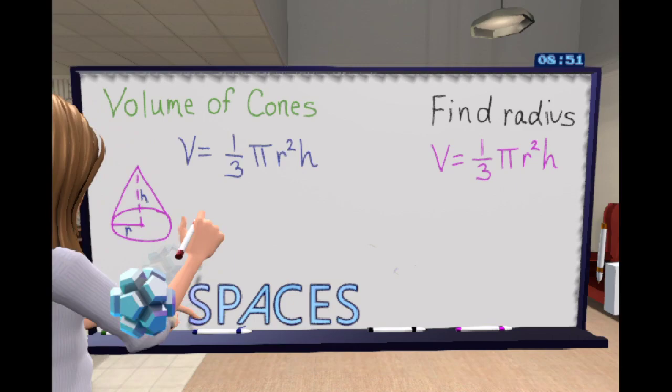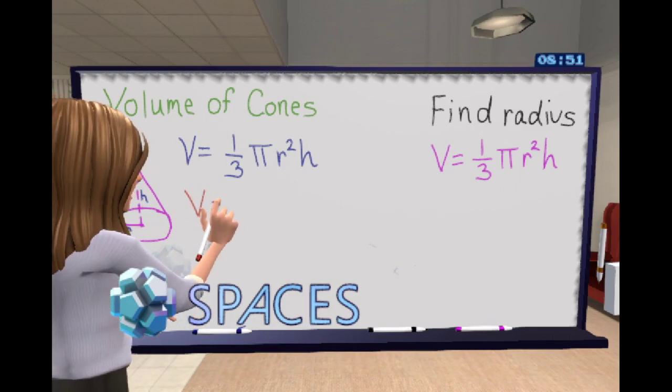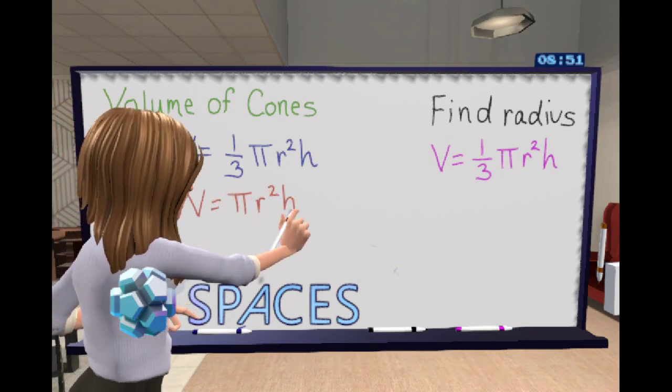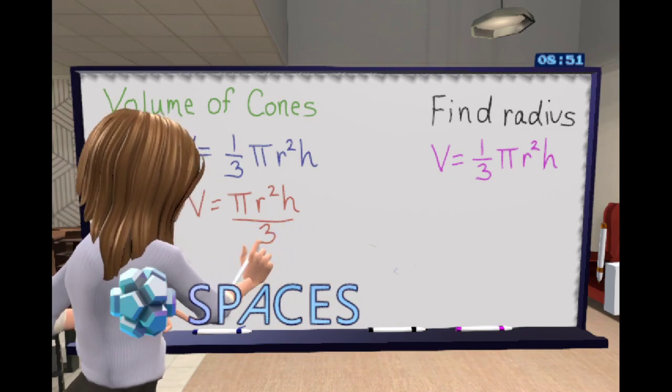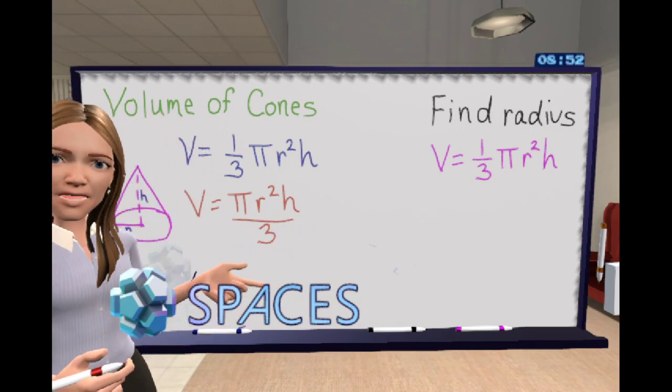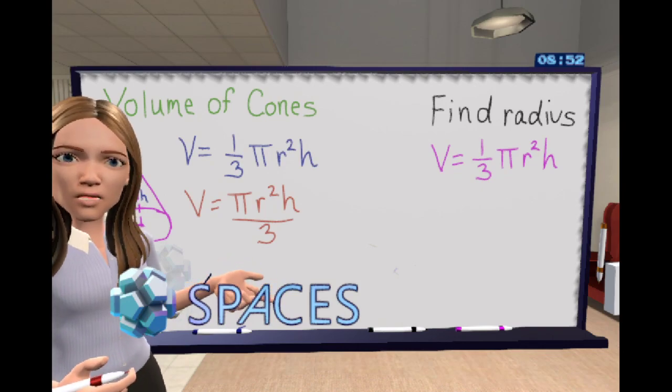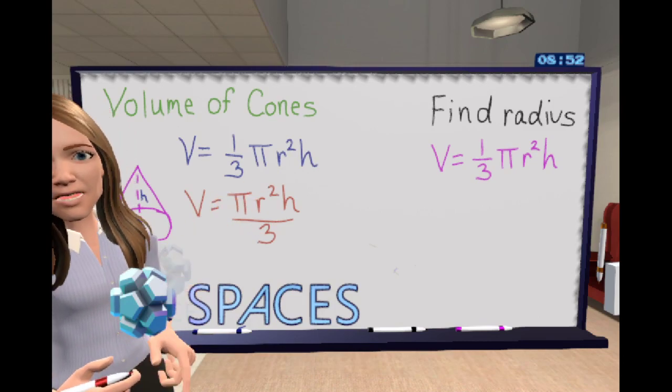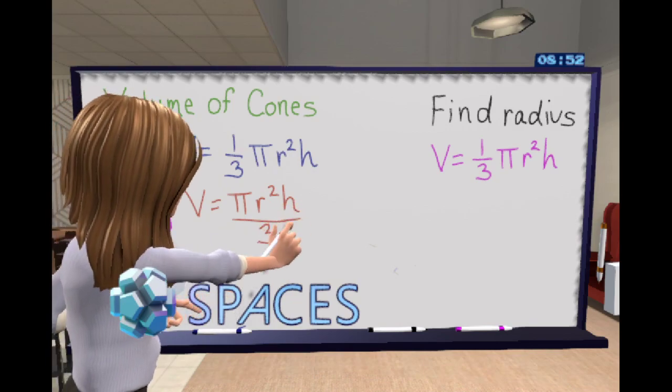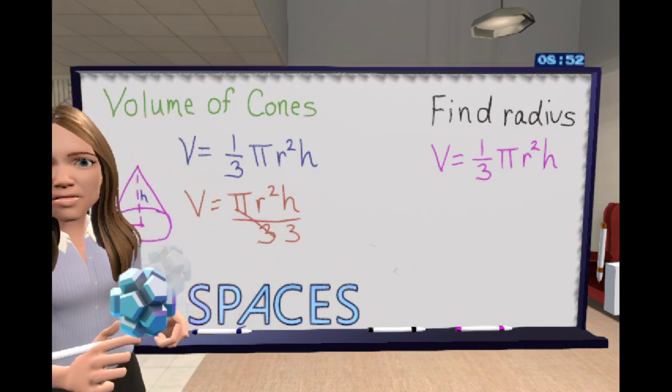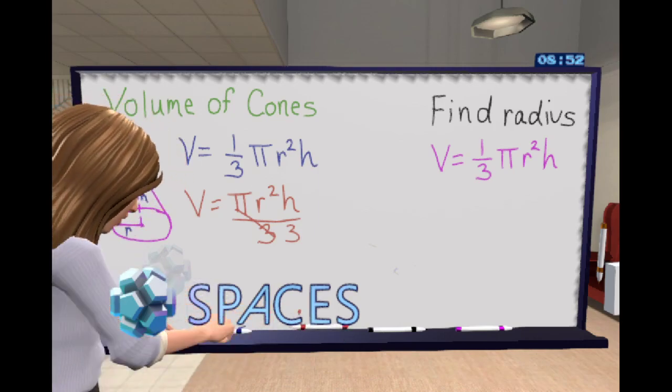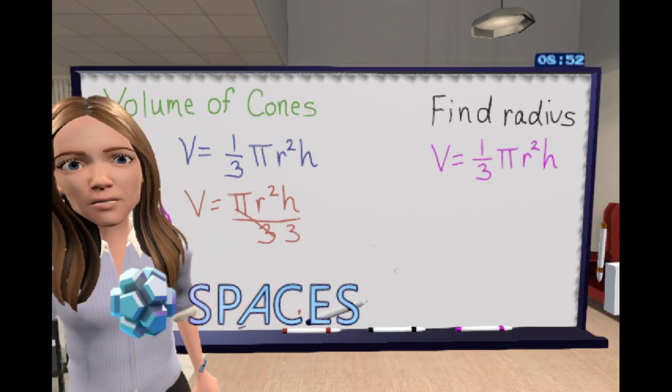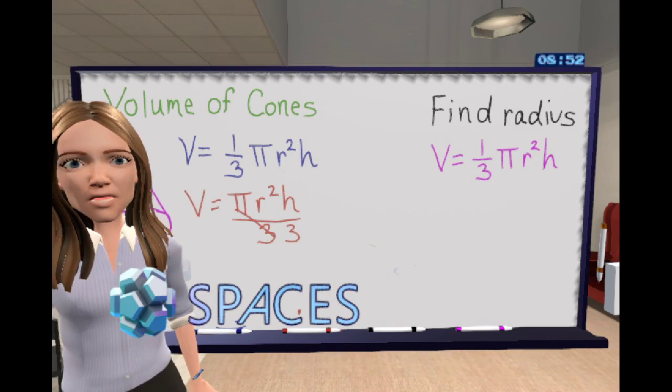You could say V equals pi r squared times height divided by three. Another way you might see this equation for volume of a cone online is volume equals pi r squared times h divided by three. Another cool thing about virtual reality here is if I don't feel like putting the marker back the way that I should, I could just throw it out and it'll find its home eventually.